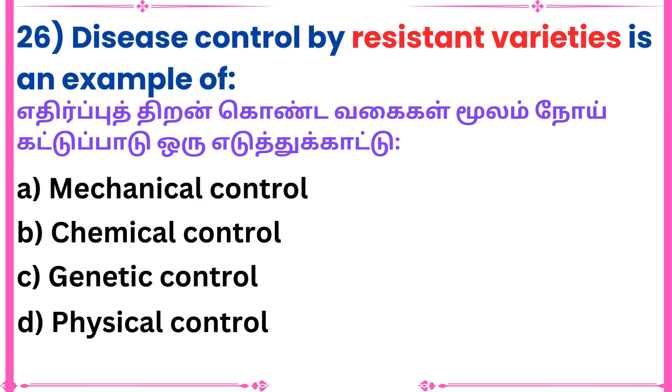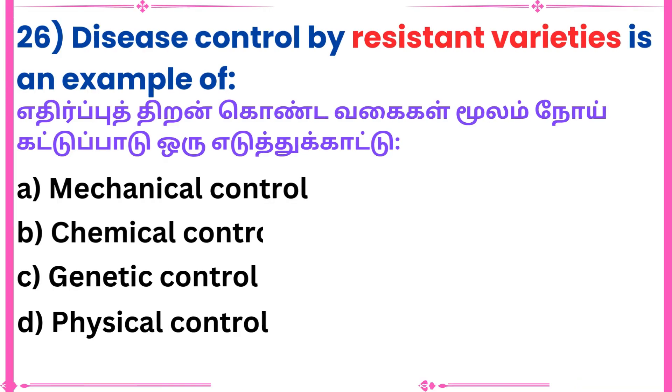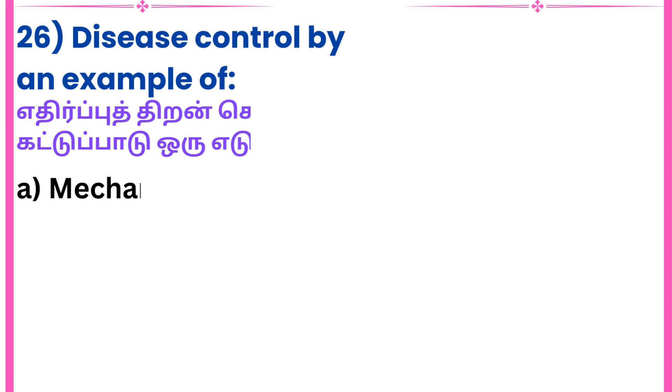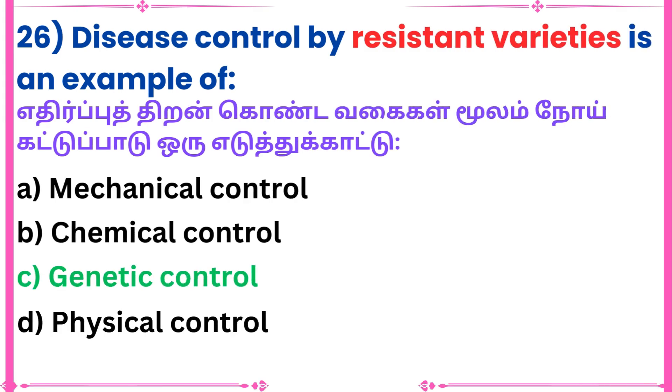Question 26: Disease control by resistant varieties is an example of — Answer: Genetic control.